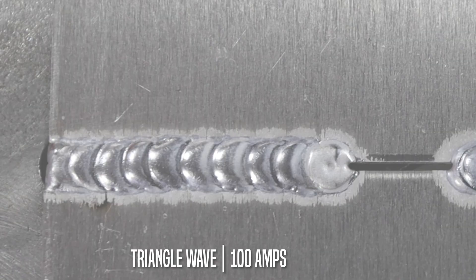So here we go post weld on triangle wave. Here we were at 100 amps. You can see the toes here, there's a very defined toe. It's a sharp peak between them. The weld itself is also very convex. It looks cold. It is cold.